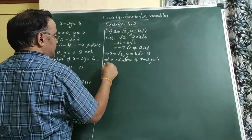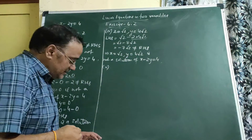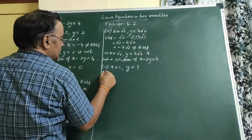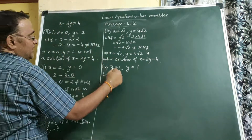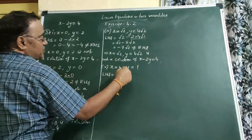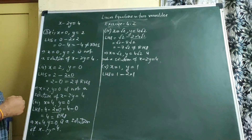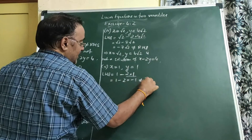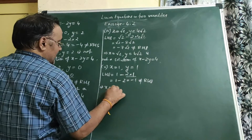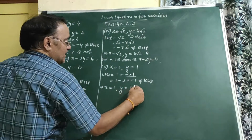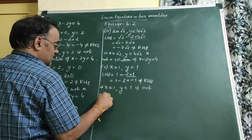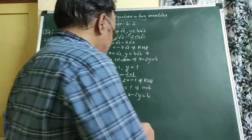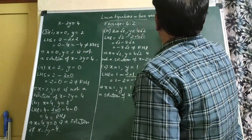Fifth and last point (1, 1): LHS = 1 − 2×1 = −1, which is not equal to RHS = 4, so (1,1) is not a solution of x − 2y = 4. We have now completed question number 3. Now question number 4, which is very important.